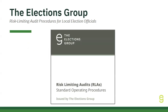First up, we have our featured resource. The risk-limiting audit procedures offer structured step-by-step instructions for local election officials to ensure accuracy, transparency, and compliance with security protocols throughout the RLA process. A risk-limiting audit, or an RLA, is a post-election tabulation audit in which a random sample of voted ballots is manually examined for evidence that the originally reported outcome of the election is correct. As its name suggests, an RLA limits the risk of certifying a contest with the wrong winner.